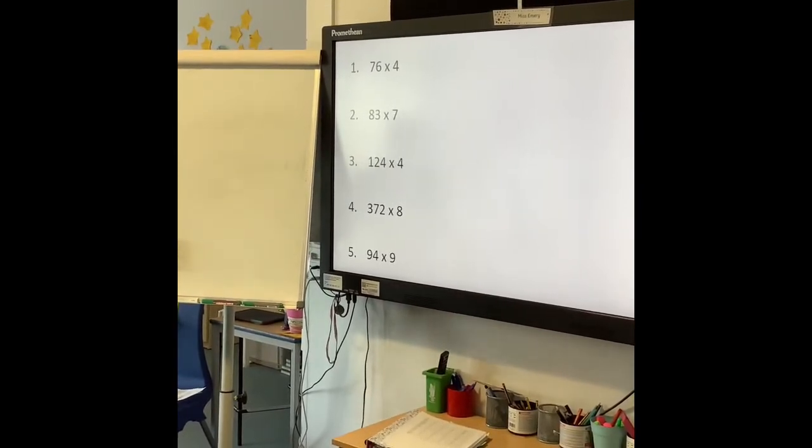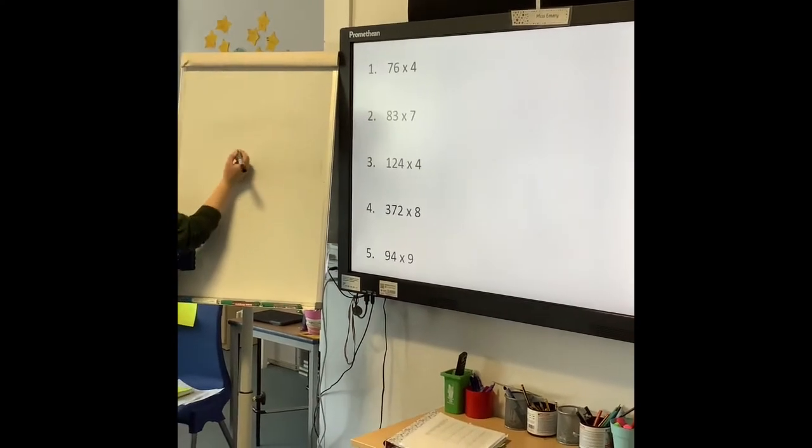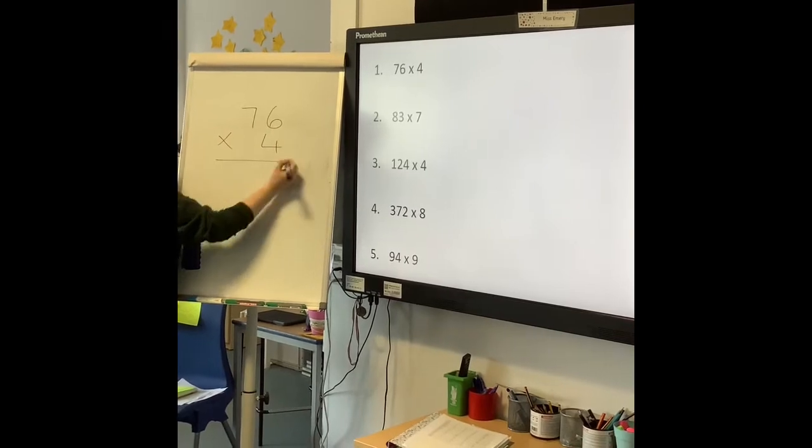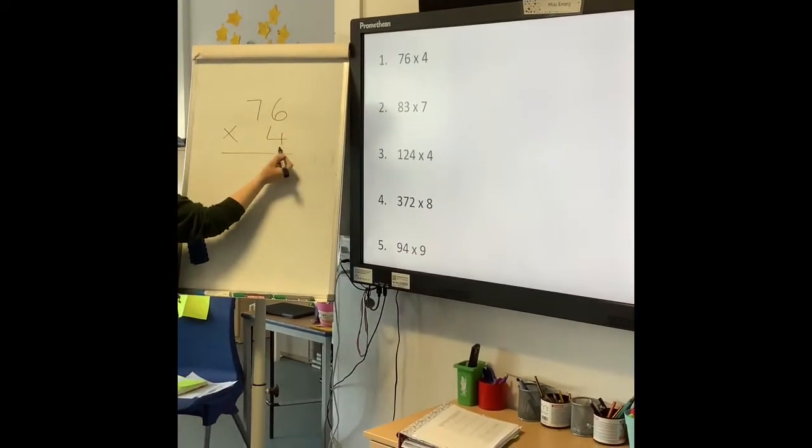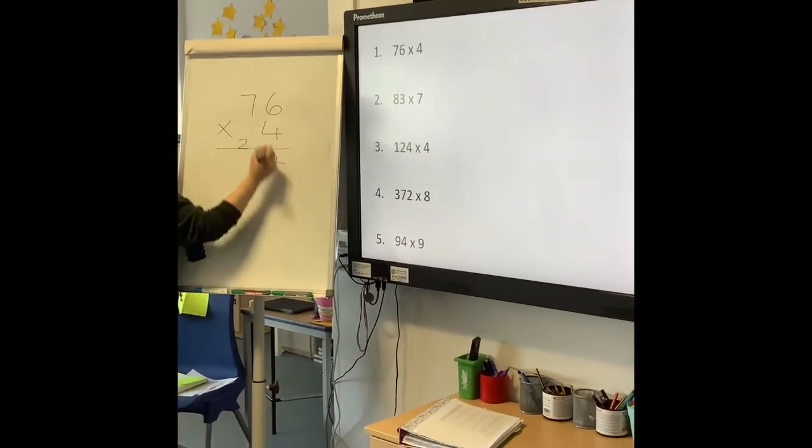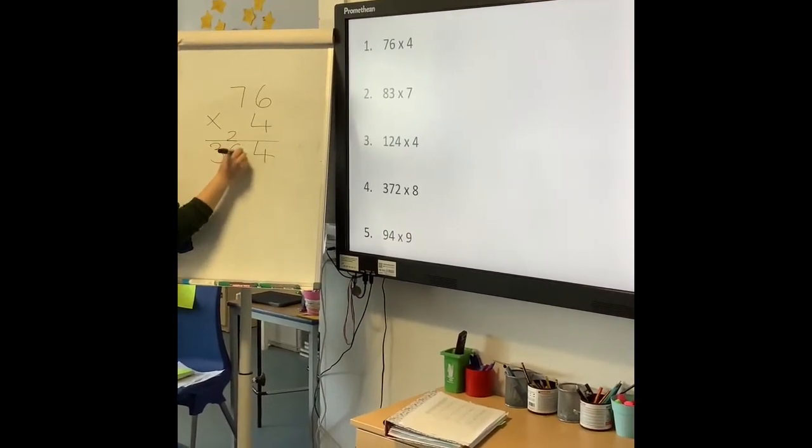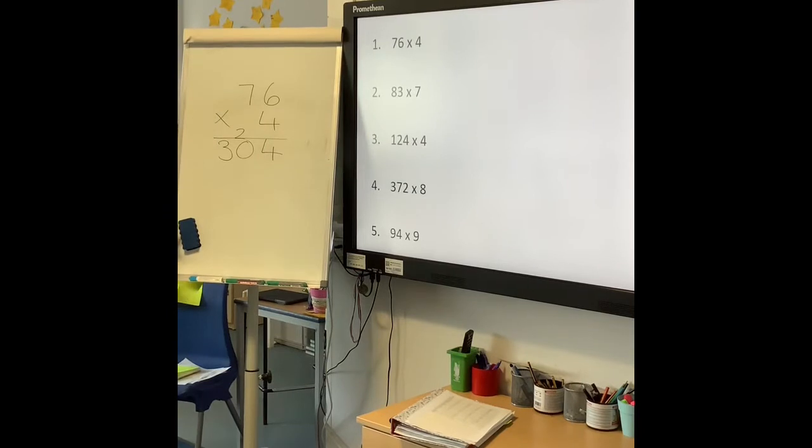So hopefully you've had a go at the Fluid of 5 now, so let's go through and see if you've got the right answers. First one, 76 times 4. Hopefully you laid it out like that. Starting with 6 times 4 is 24, 7 times 4 is 28, add 2 is 30. Hopefully you should have had the answer 304.